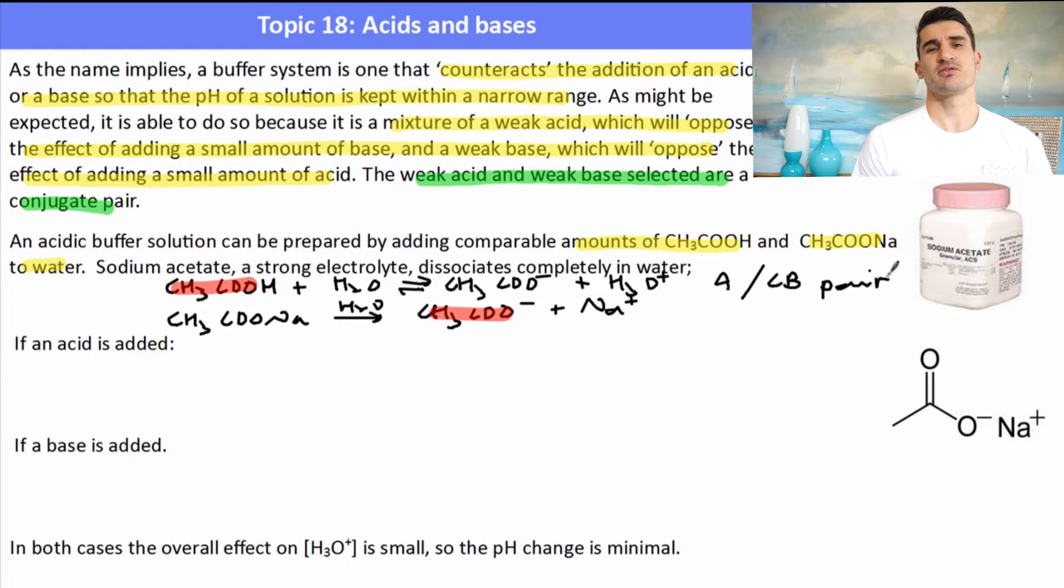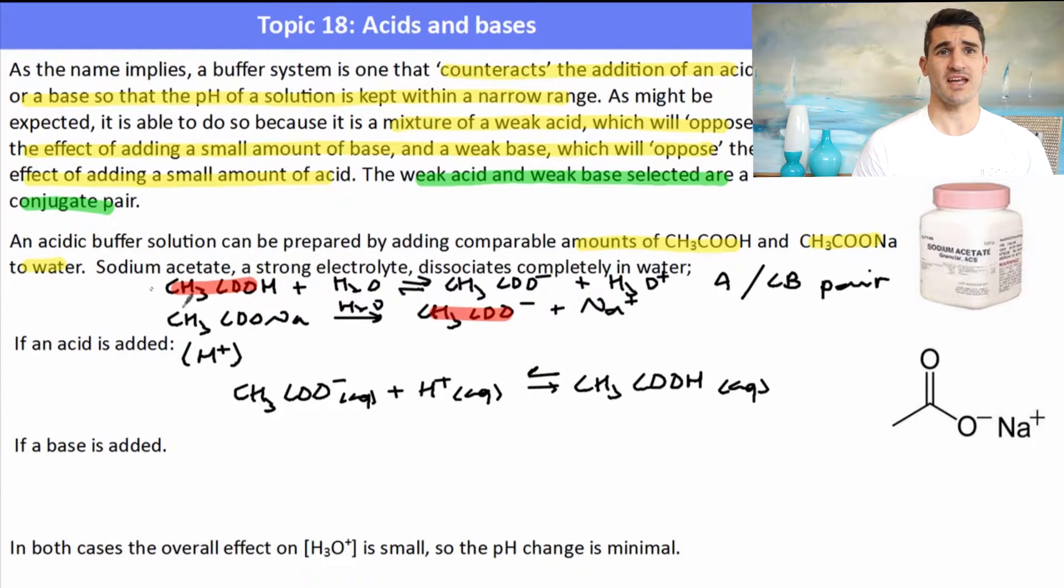That can act as a buffer because if we add some H plus then one of those species will be able to react with the H plus. And in fact because the CH3COO minus, the ethanoate ion, is a weak base, it will accept those protons. So it will react to try and reduce the concentration of H plus to form ethanoic acid. And we know that ethanoic acid is a weak acid and it only ionizes to about three percent. So it's going to reduce that pH change.